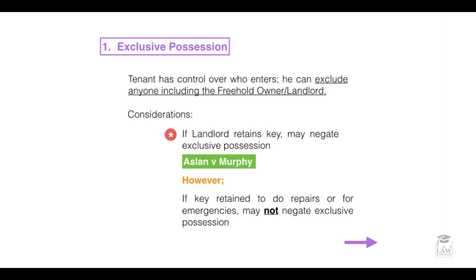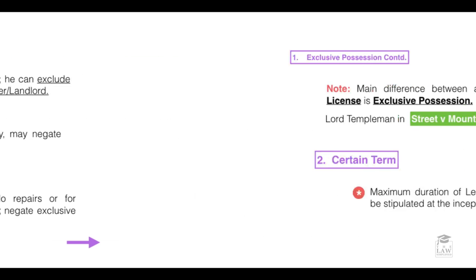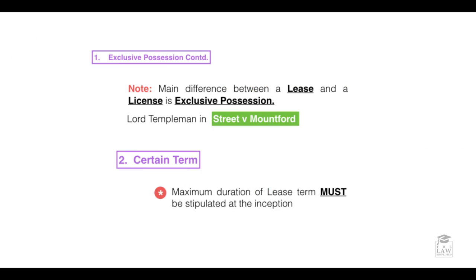What should be derived from this is that exclusive possession of a lease is determined by the court on a case-by-case basis. There might be extenuating circumstances which lead the court to believe that the retention of a key or entry permission retained by the landlord was due to some particular reasoning — it is not a blanket situation where retention of a key automatically negates exclusive possession.